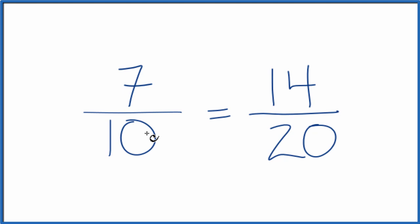If you divide 7 by 10 or 14 by 20, you get the same decimal answer, 0.7. That's because they're equivalent fractions.